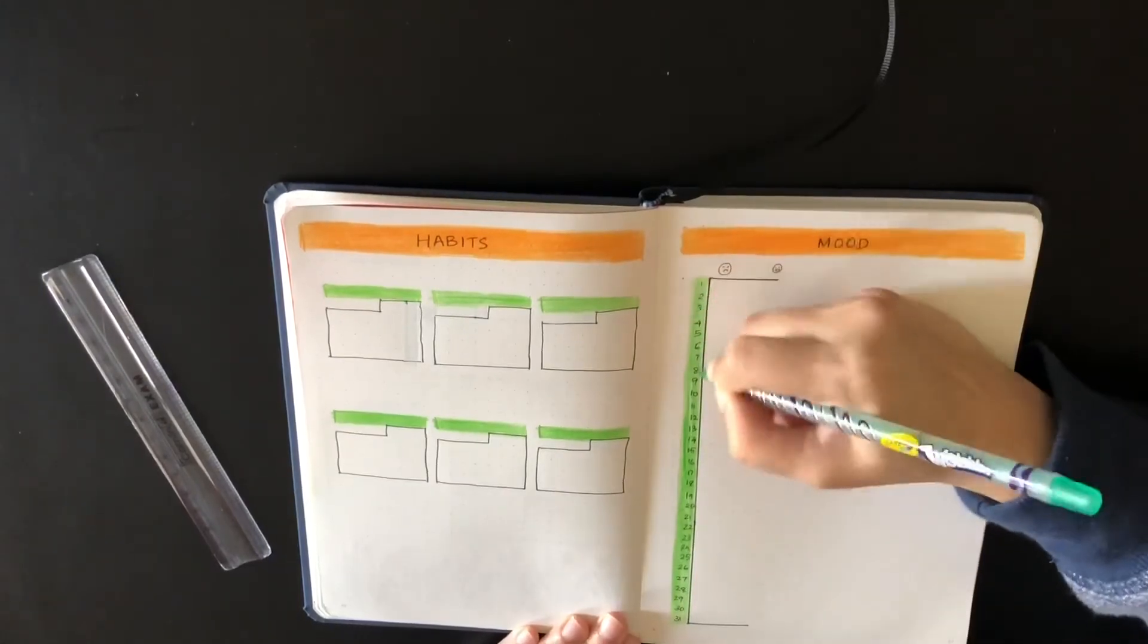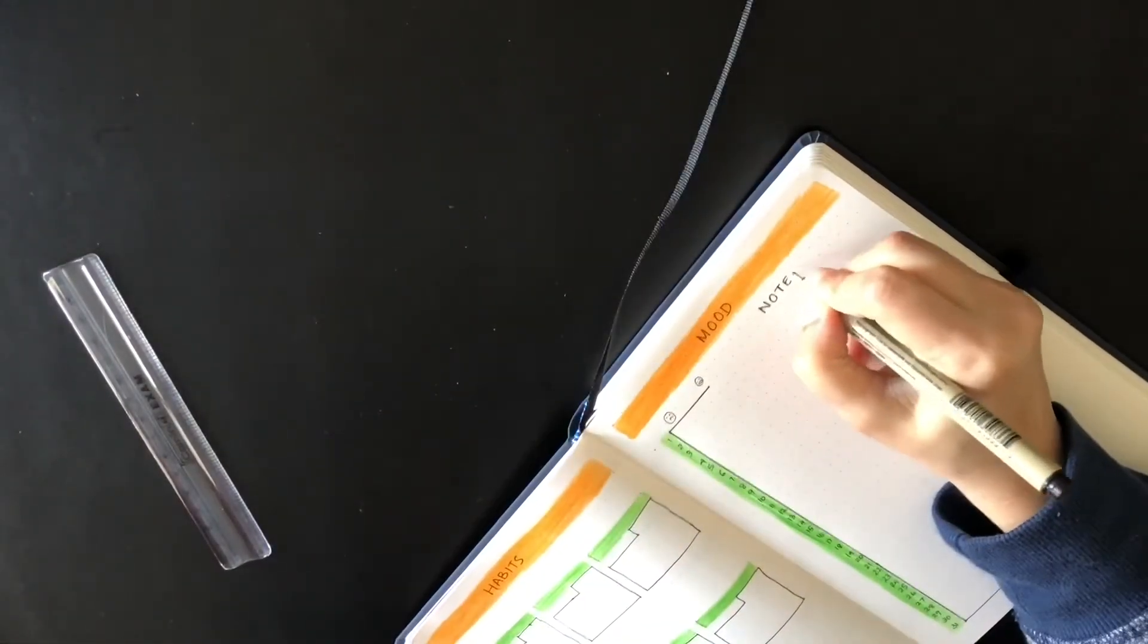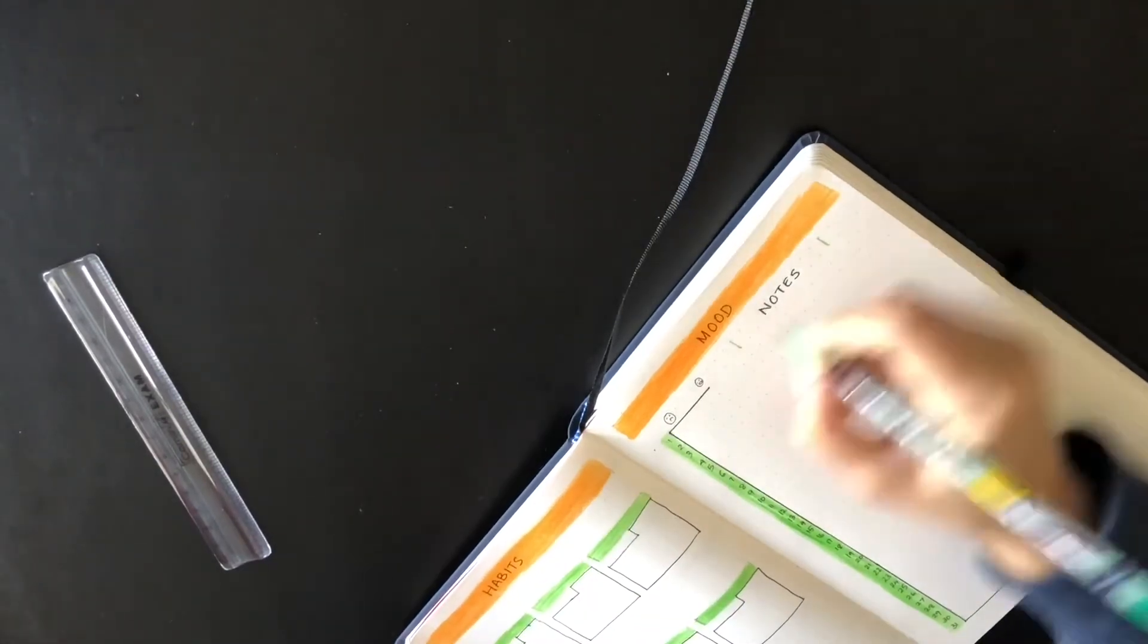I'm highlighting the dates in green to go with the theme. On the right side, I can write anything for that particular date.